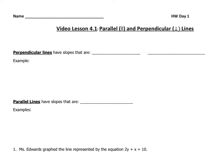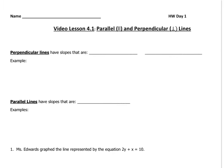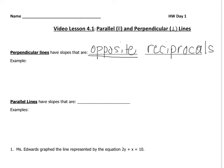Perpendicular lines have slopes that are called opposite reciprocals. Opposite means one is positive and one is negative. Reciprocal means one is the flip of the other. Perpendicular lines are lines that intersect to form a right angle — that's why this symbol is used to say that two lines are perpendicular.